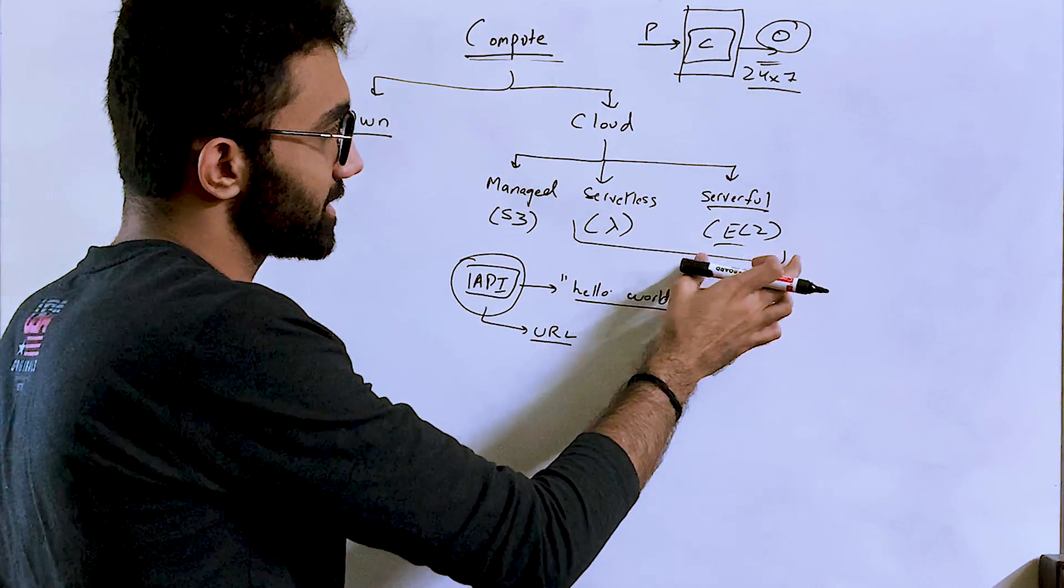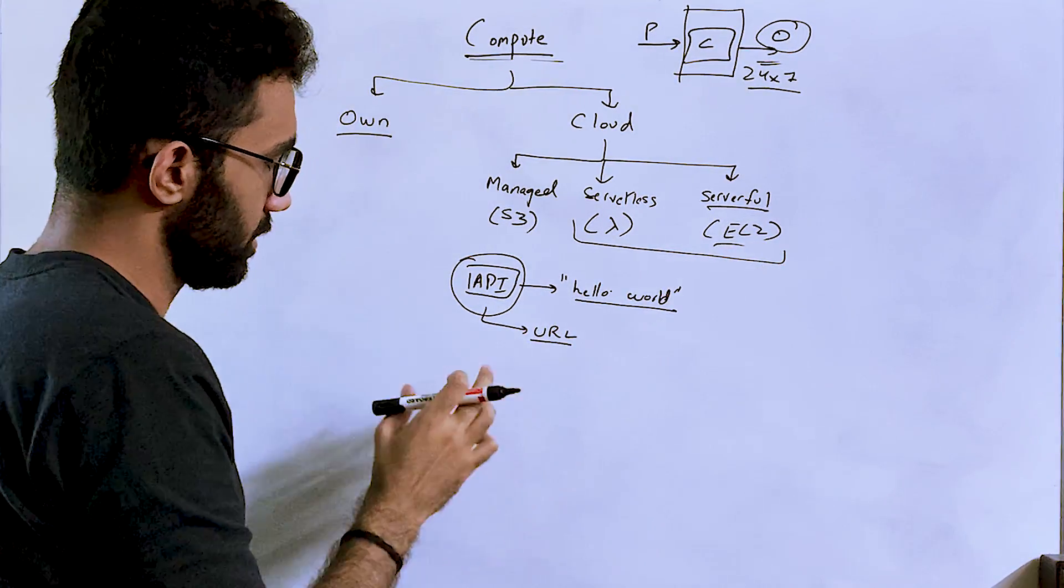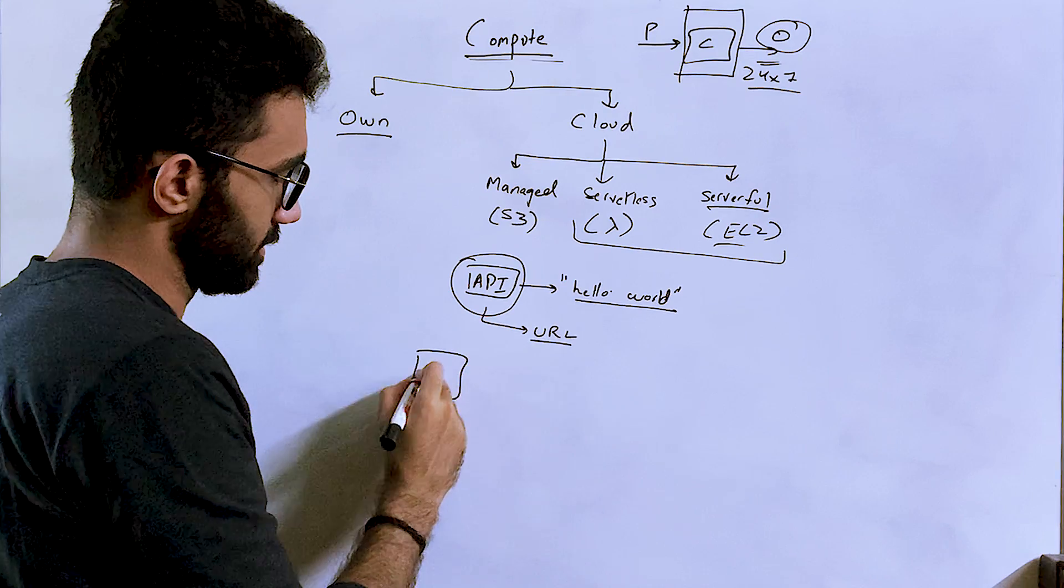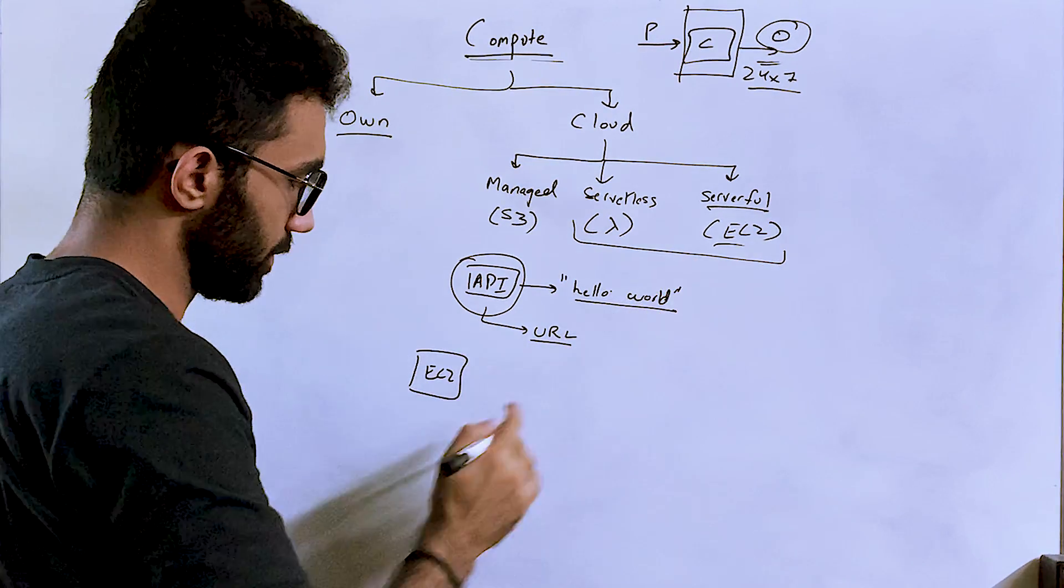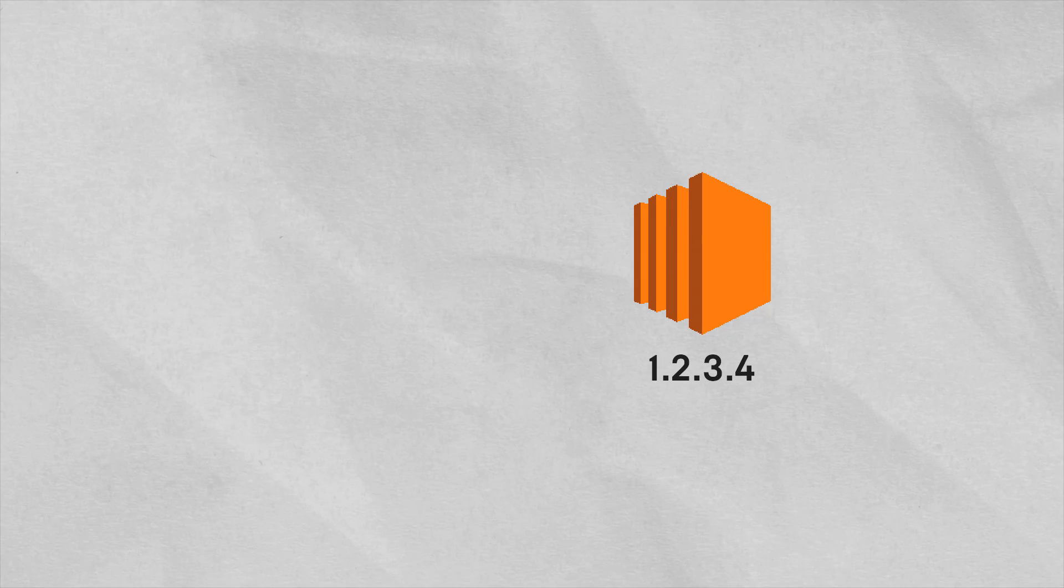Now, when we talk about serverful architecture over here, let's say you created an EC2 instance first. We're talking about the serverful part. When you create this EC2 instance, you get an IP address. This IP address, let's say this is 1.2.3.4.